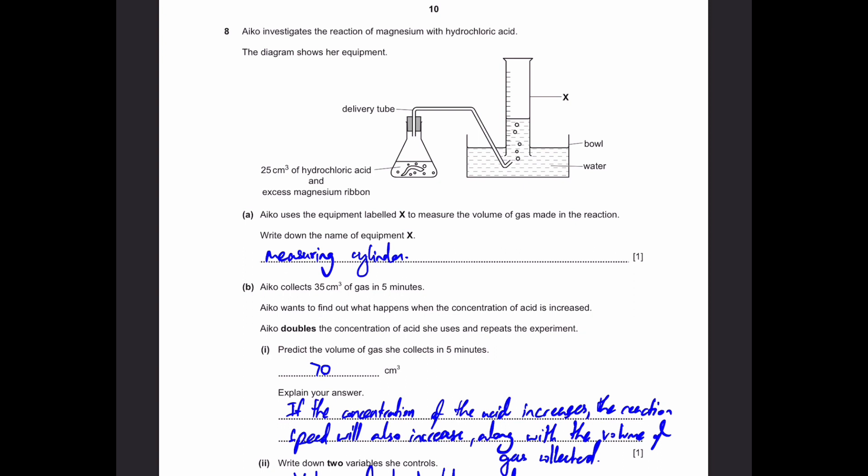Ico collects 35 cm³ of gas in 5 minutes. Ico wants to find out what happens when the concentration of the acid is increased. Ico doubles the concentration of the acid she uses and repeats the experiment. Predict the volume of gas she collects in 5 minutes. That's simply 70 cm³ because it's double of 35 cm³. The concentration has been doubled, that means there will be more hydrochloric acid particles, that means it will react much faster and more gas will be released. And because of that, we can say that the volume of gas she collects will also double. Explain the answer. That's what I just said, if the concentration of the acid increases, the reaction speed will also increase, along with the volume of the gas collected. That's the answer.